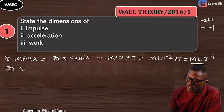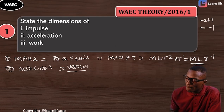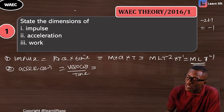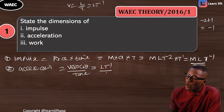Now let's find the dimension for acceleration. The formula for acceleration is velocity over time. The dimension for velocity is displacement over time, that's LT⁻¹. So acceleration becomes LT⁻¹ over T, which gives LT⁻².